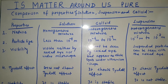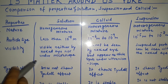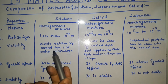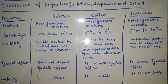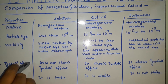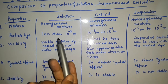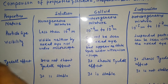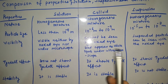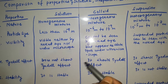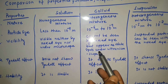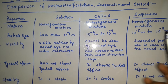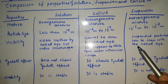Third point is visibility. Particles of solutions cannot be seen by the naked eye or under a microscope — they are very, very small in size. Colloid particles are a little bit bigger than solution particles, but they cannot be seen by the naked eye. Under an ultra-microscope, they can be observed as a white spot. Suspension particles are clearly seen by our naked eyes.